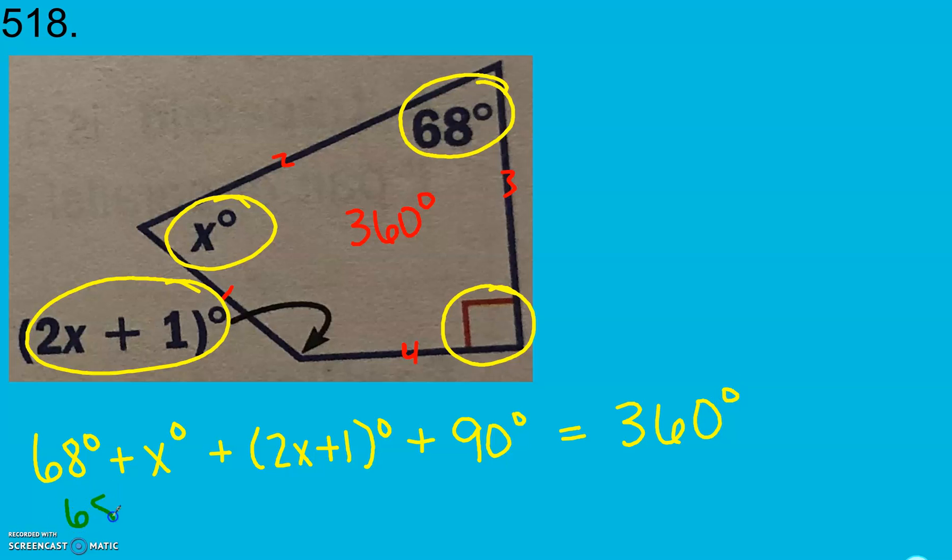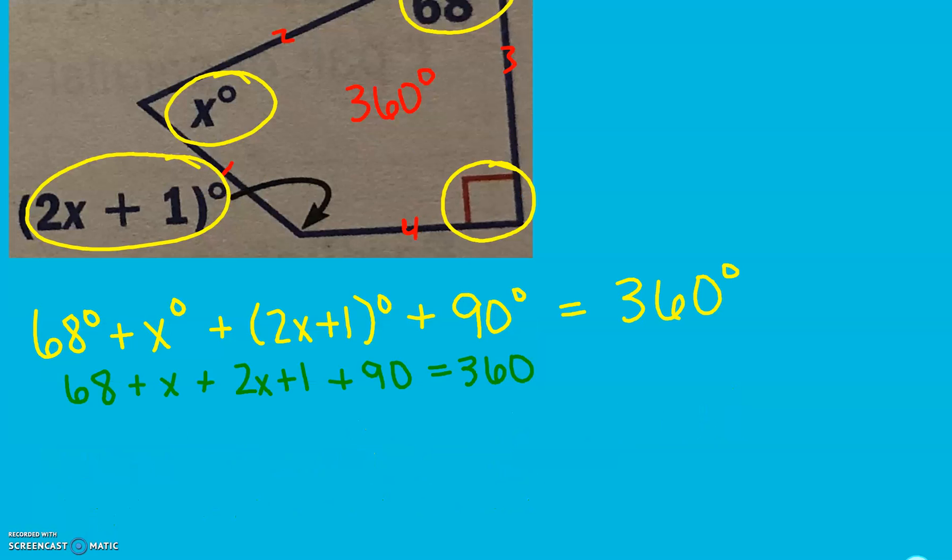Now, we have 68 plus x plus 2x plus 1 plus 90 equals 360. I don't need my parentheses there because there's nothing special happening. I just got rid of my labels so I can work with these easier. I can combine like terms. I have 1x plus 2x, which gives me 3x. And I have 68 plus 1 plus 90, which gives me 159.